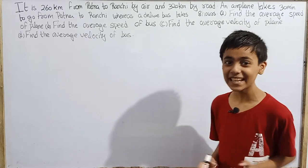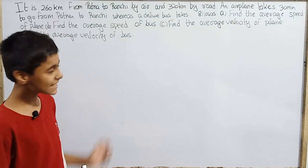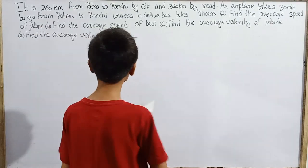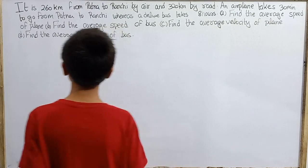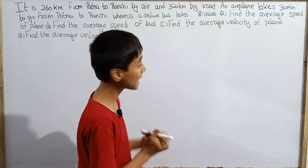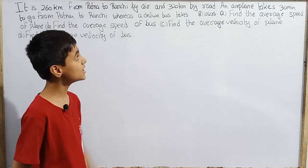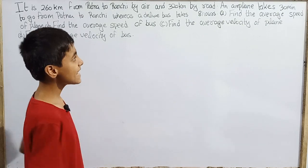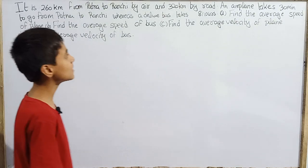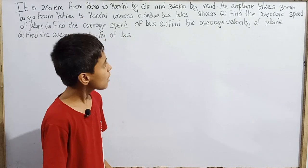Hello everyone and we are back again with Concepts of Physics textbook written by Professor H.C. Verma Sir. Now the textbook from kinematics is question number 3. It is 260 km from Patna to Ranchi by air and 320 km by road. An airplane takes 30 minutes to go from Patna to Ranchi whereas a deluxe bus takes 8 hours.